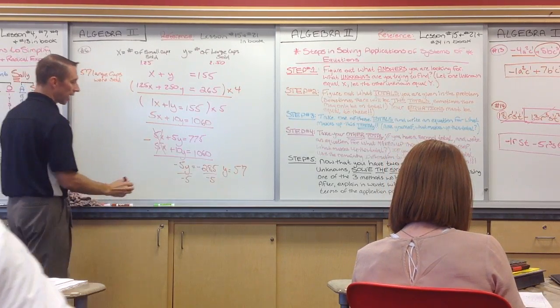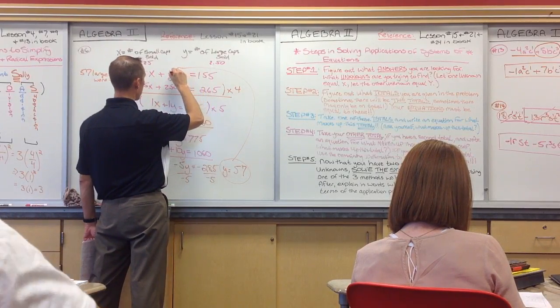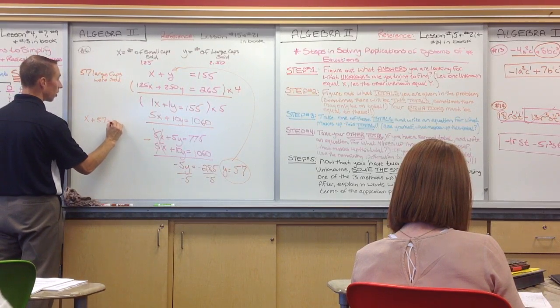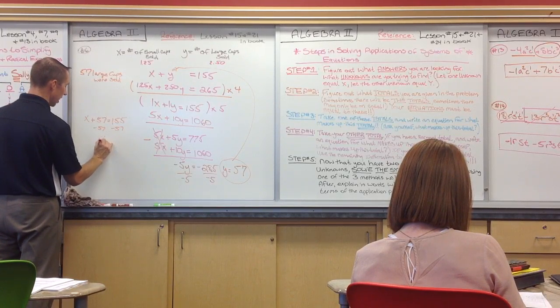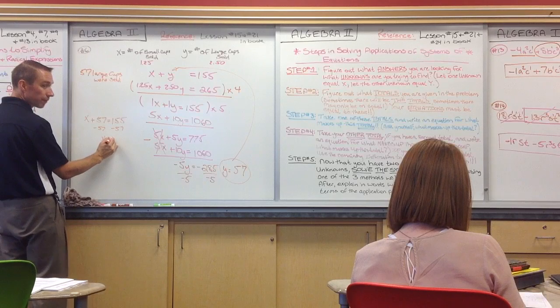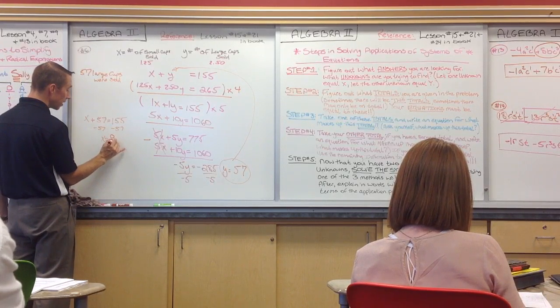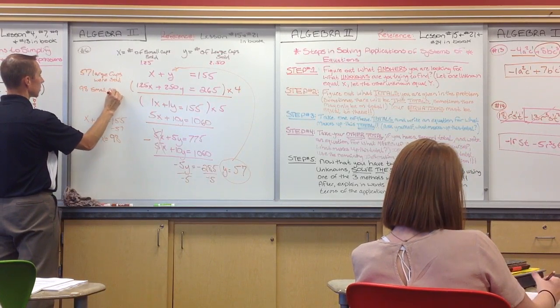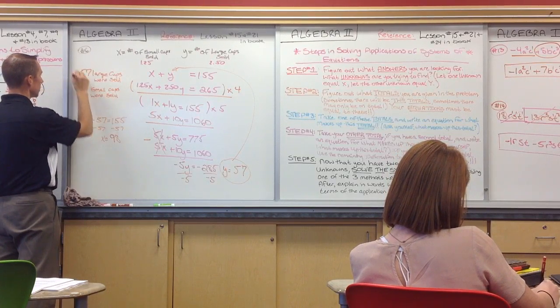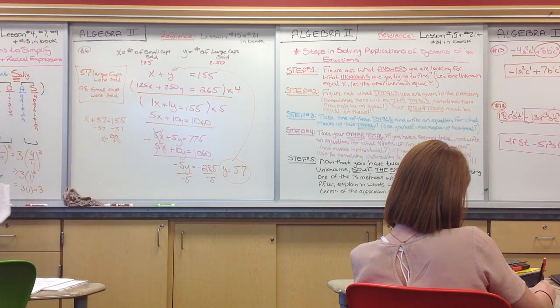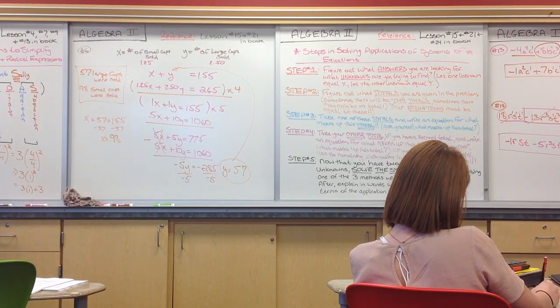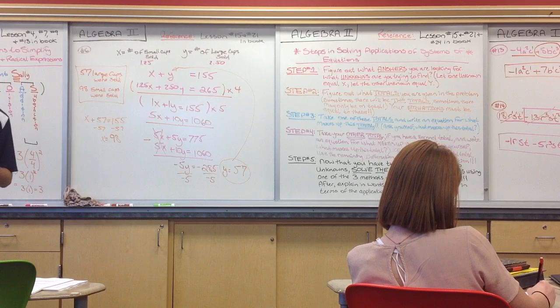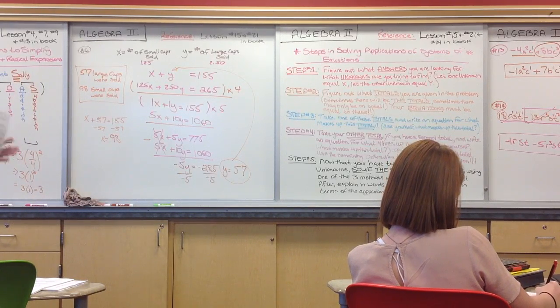So, that means that 57 large cups were sold. Now, what about my x? Well, we can simply take this, plug it back into my y right here to find my x. So, I get x plus 57 is equal to 155. Subtract 57. x is equal to 98. So, 98 small cups were sold. 57 large, 98 small, adds up to 155 overall sold. And, it also will get you $265 at those costs. Does that make sense?